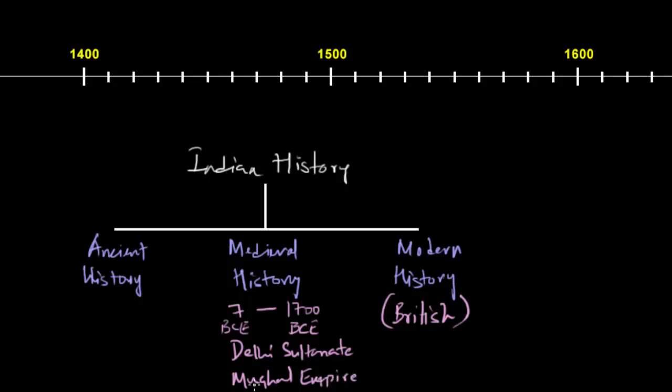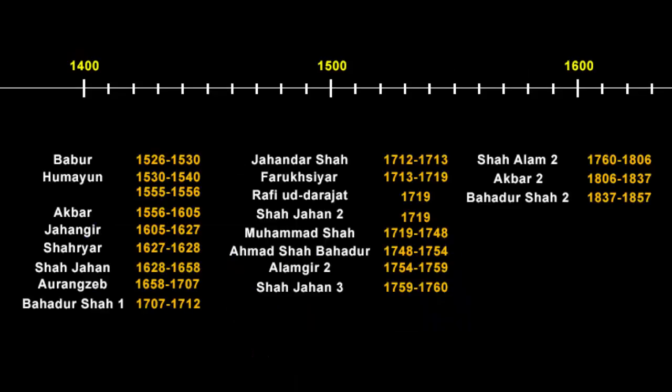To understand the British rule in India, we have to go a little backward towards the end of the medieval period, when the Mughal Empire came to an end after the death of their last influential and powerful emperor. Here is the list of Mughal emperors who ruled India. Aurangzeb was the last powerful Mughal ruler. After him, none of them were that influential. However, Bahadur Shah Zafar was the last emperor till 1857, so the Mughal Empire officially came to an end by 1857. Nevertheless, the situation changed right after the death of Aurangzeb — that's where the real story starts.